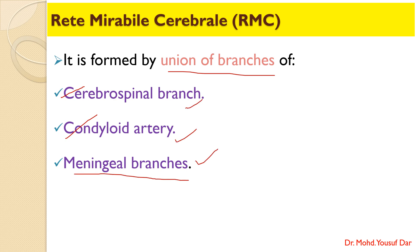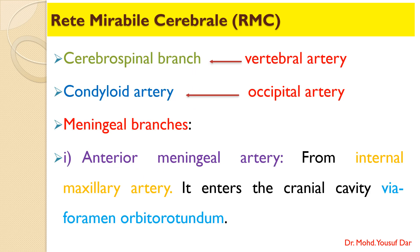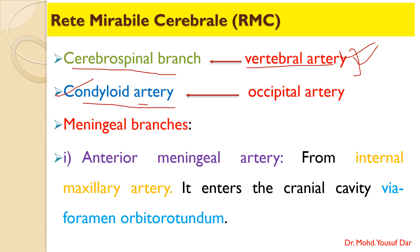The first contributing artery is the cerebrospinal branch, which arises from the vertebral artery. The vertebral artery itself arises from the costal cervical trunk — that is, the intrathoracic branch of the axillary artery. The second contributor is the condyloid artery.